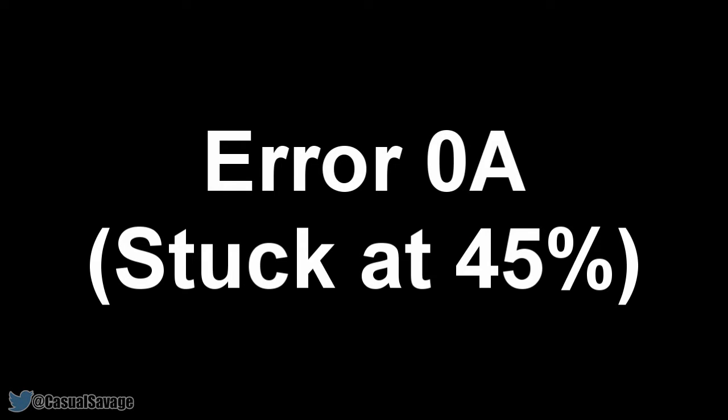Getting straight into it, we're going to start off with Error 0A — stuck at 45%. If you're stuck at 45% during the jailbreak process, you're simply going to have to head into iTunes to resolve this one. With the iOS 9 device connected via USB, open iTunes and select it at the top. Under the backups header, make sure the 'Encrypt iPhone Backup' option is not checked.